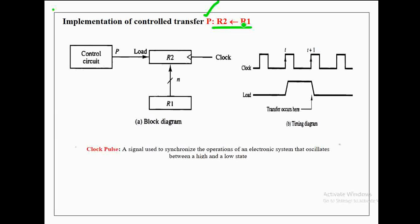Now let's discuss how to construct a block diagram for this register transfer statement. From the statement R2 ← R1, it is implied that data lines exist from R1 to R2, and R2 has parallel load capacity. So a data line is drawn from R1 to R2, and a load input signal is associated with R2.